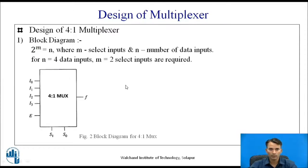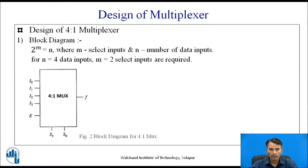Let us draw the block diagram. The data inputs are represented by the letter i, so four inputs are i0, i1, i2, i3. Select inputs are s1 and s0. Along with these, we have one more input — the enable input denoted as e — which is used to start or stop the operation of the multiplexer, and one output represented as f.